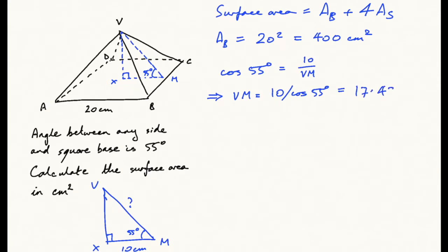17.434 centimeters. Now we've got a triangle BCV. BC is 20 centimeters because it's a square-sided triangle, and we've found this height here because this is M. The area of the side